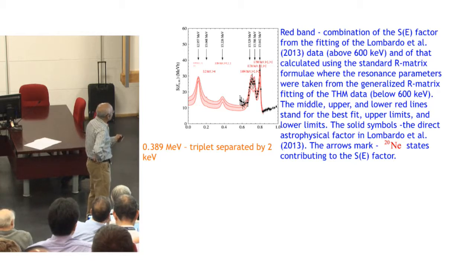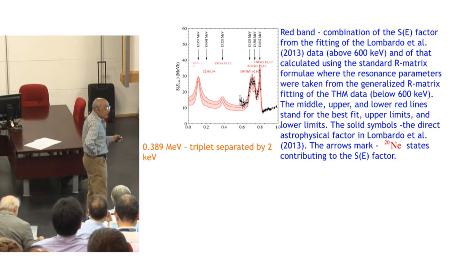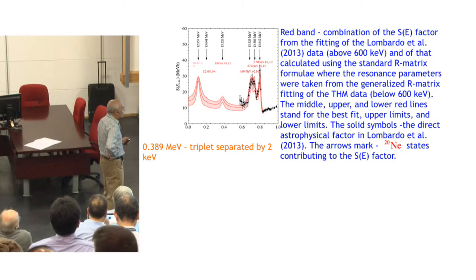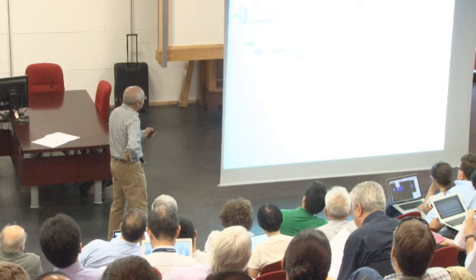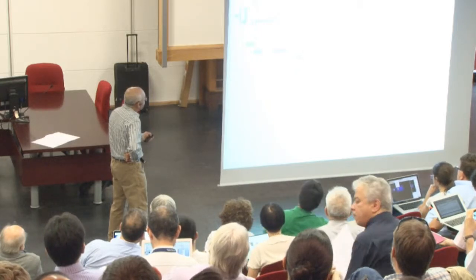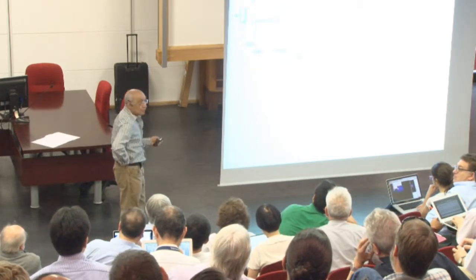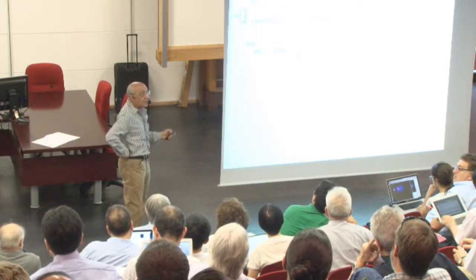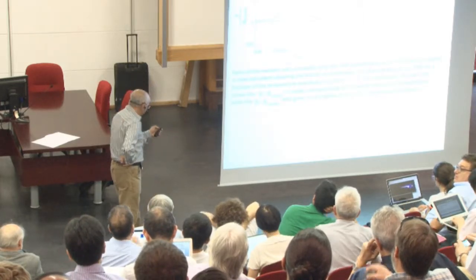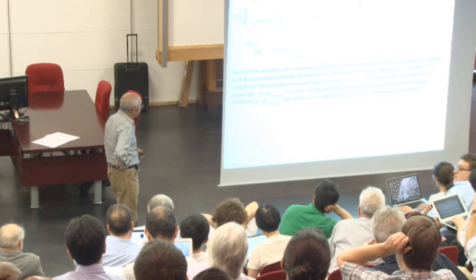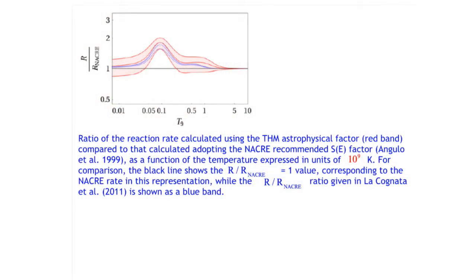The Trojan horse data were normalized to direct data, and then we know exactly now the width and strength of the resonance, which is the main contributor to the destruction of fluorine-19. It was very difficult to separate at this energy. Basically there are three resonances separated by 2 keV only. This is the ratio of the Trojan horse reaction rate to NACRE, and you see a strong deviation at this temperature. This is due to the presence of the newly discovered resonance. As I told you, Trojan horse allows us to go as far as we need, down to zero energy or even below to negative energies. This should be 1 if it coincides with NACRE, and it is higher than 1.